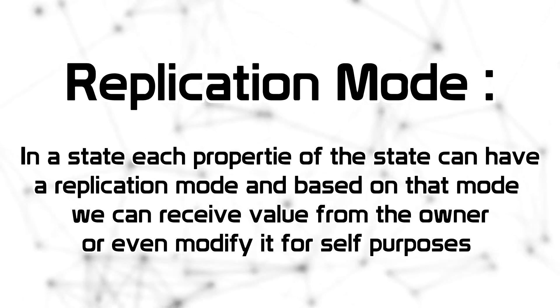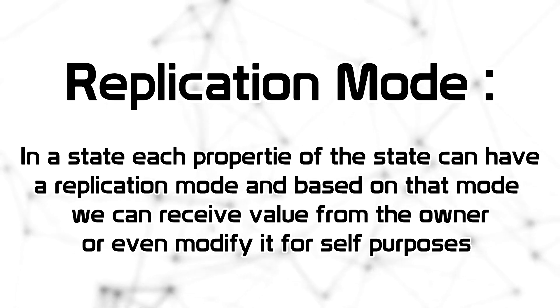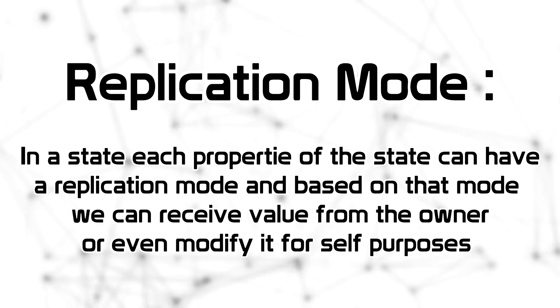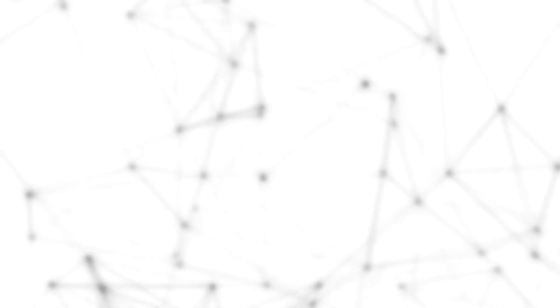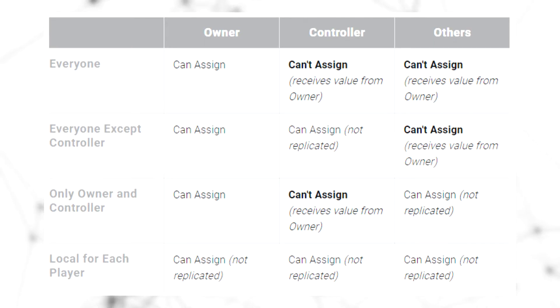I didn't talk about replication mode last episode because I felt we first needed to understand callbacks. In the state, each property can have a replication mode. Based on the mode, we can receive values from the owner or even modify them ourselves. There are four modes: everyone, everyone except controller, owner and controller only, and local for each player.